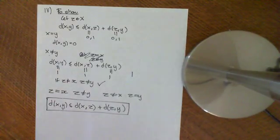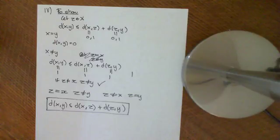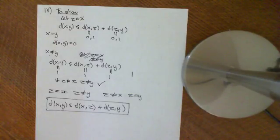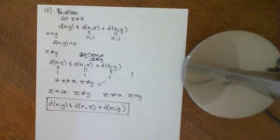So that is the discrete metric — you can put it on any set you want and create a metric space. There is a bunch of metric spaces that you can easily create.